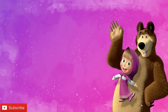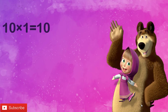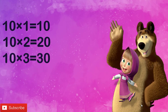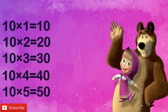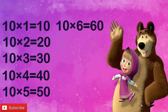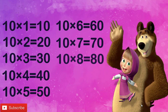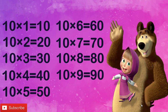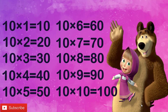Let's revise once children. 10 1's are 10, 10 2's are 20, 10 3's are 30, 10 4's are 40, 10 5's are 50, 10 6's are 60, 10 7's are 70, 10 8's are 80, 10 9's are 90, 10 10's are 100.